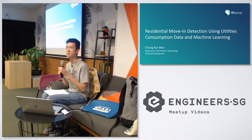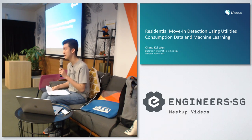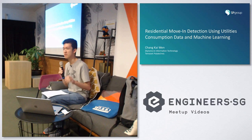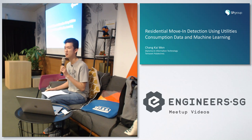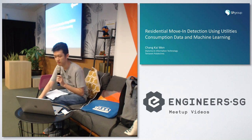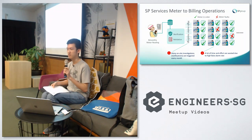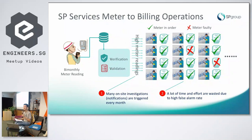The project I've been working on is residential movement detection using utilities consumption data and machine learning. This project is part of a larger project which improves the efficiency of metering to billing operations for SP Services. Here's a brief introduction: electricity meter readings are read by meter readers and uploaded to the server at SP once every two months. Once uploaded, these readings will be checked against the system of rules.